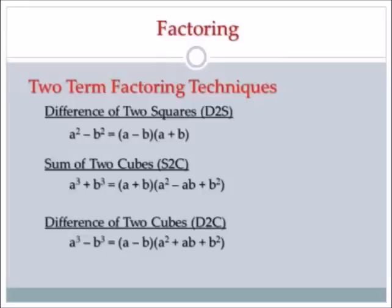The first one is difference of two squares. It's the easiest one of the three here — nothing to make it too difficult. You've got (A minus B)(A plus B). That's the formula you need to remember, but we're going to do enough of these that it will just become second nature to you. The ones you'll have to worry about a little bit are sum of two cubes and difference of two cubes.